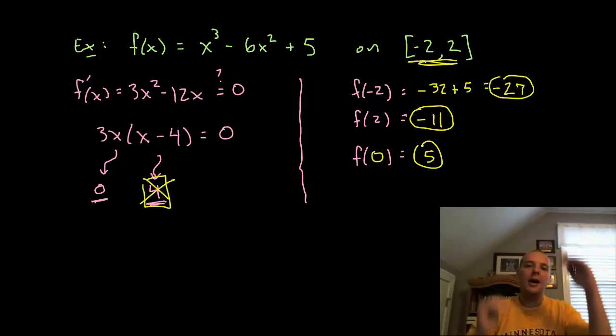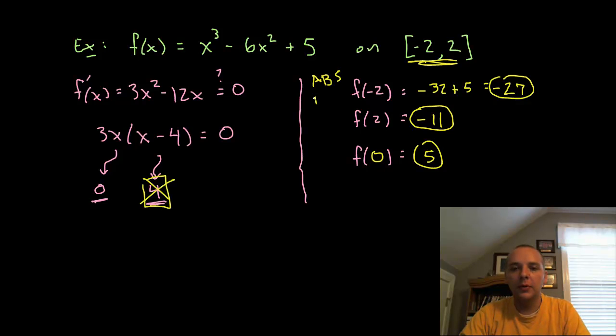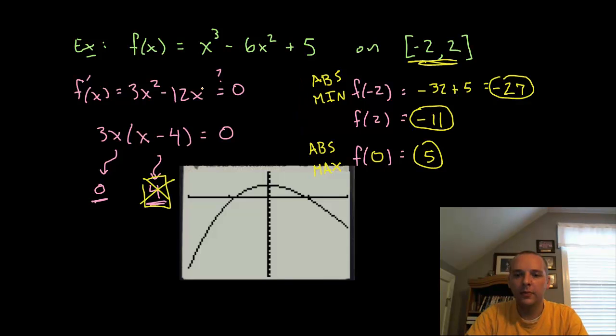So now I have the heights at all these possible candidates. And it looks like the first one is the absolute min. That is the lowest of the bunch. And f of zero is the absolute max.